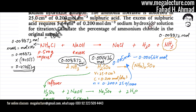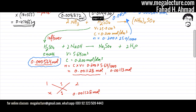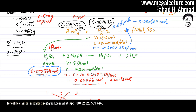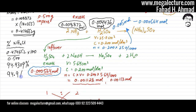Finally, calculate the percentage of ammonium chloride in the original sample. The mass of NH4Cl is 0.4746 grams and the impure sample was 0.500 grams. Percentage purity = (0.4746 ÷ 0.500) × 100 = 94.9309%. Stated to three significant figures, the answer is 94.9%.